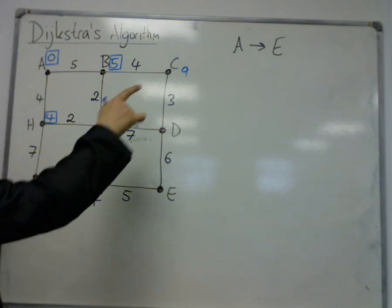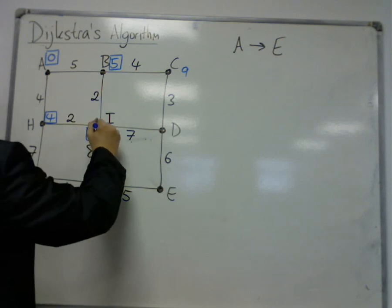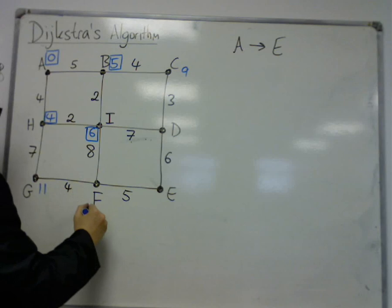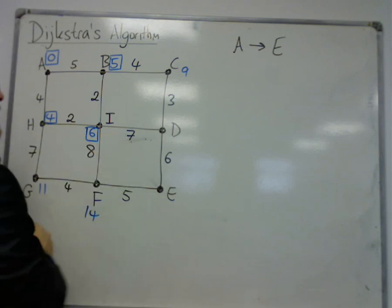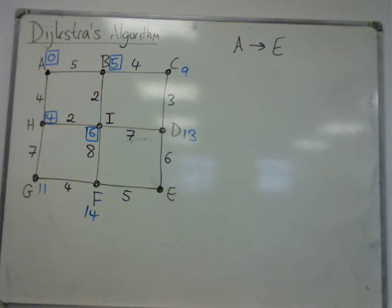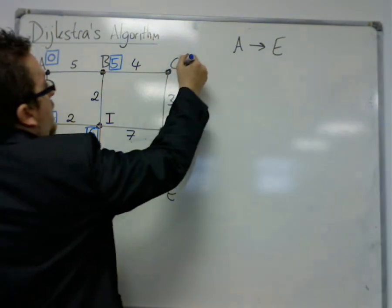So the least out of here is 6, because I've got 9, 6, and 11. So 6 is the next least. I have 6 and 8 would be 14. 6 and 7 would be 13. So then I pick the next least. 9, 13, 14, and 11. So that would be 9.